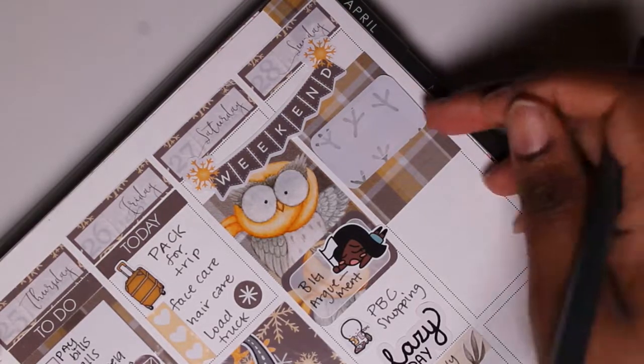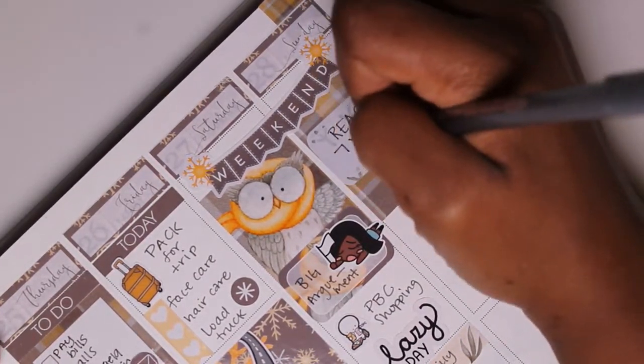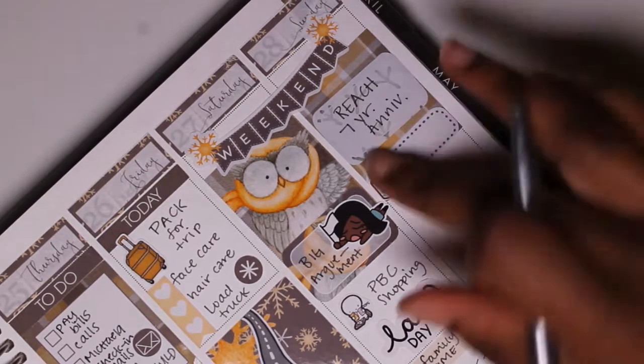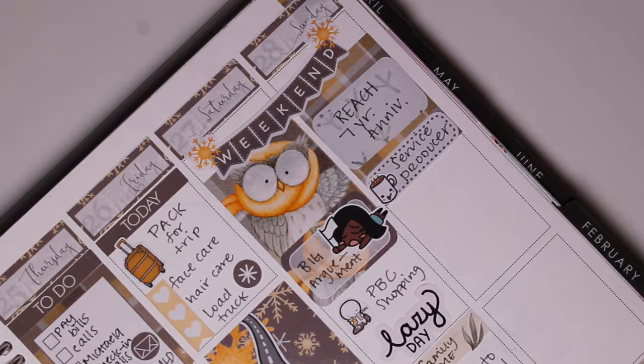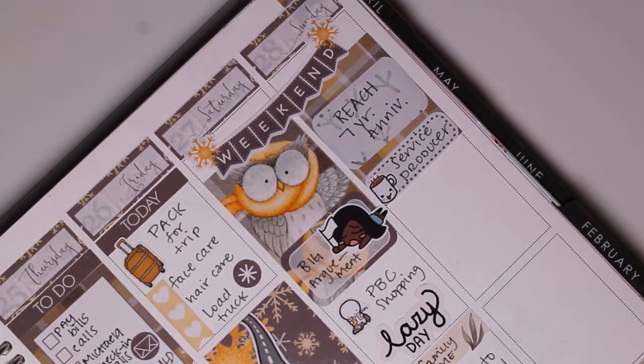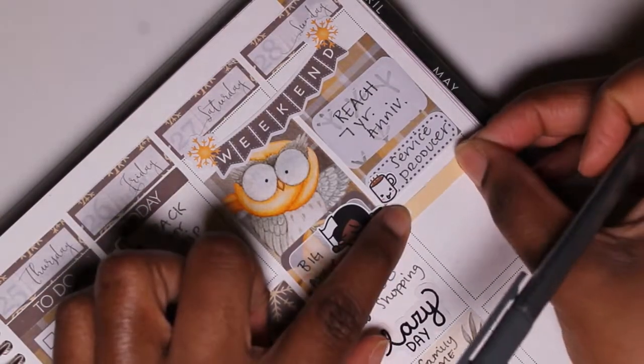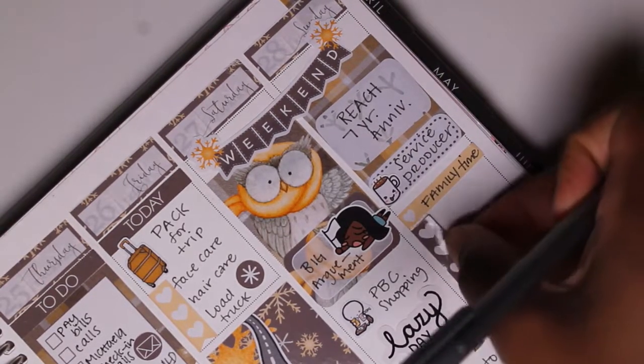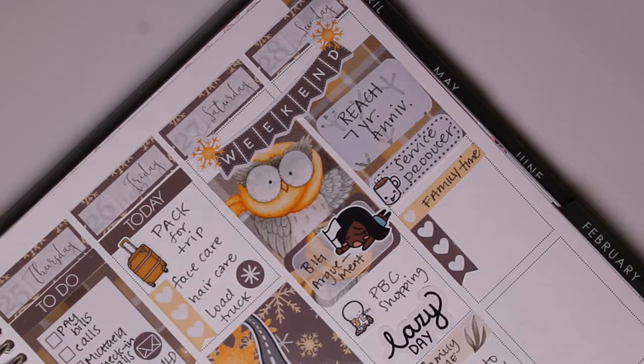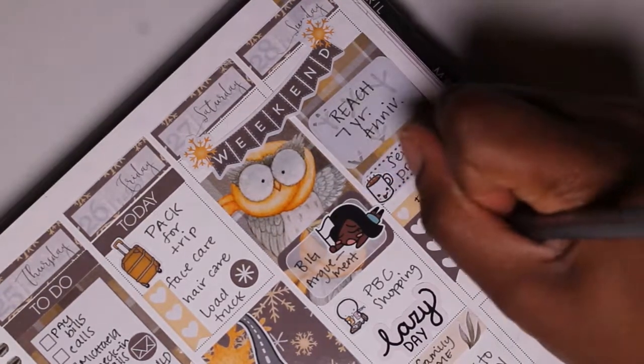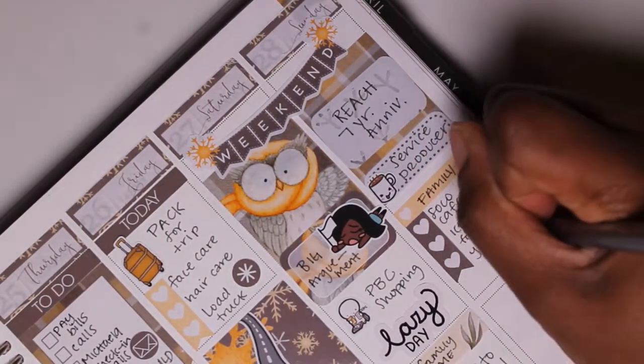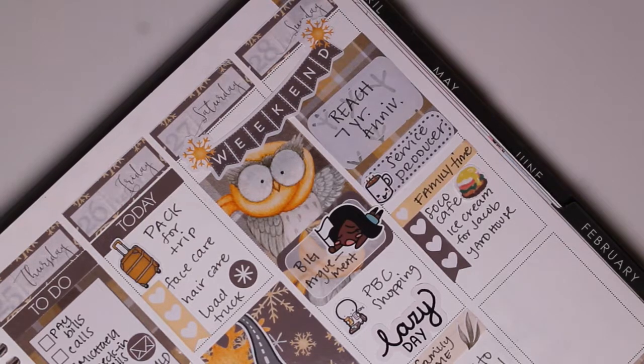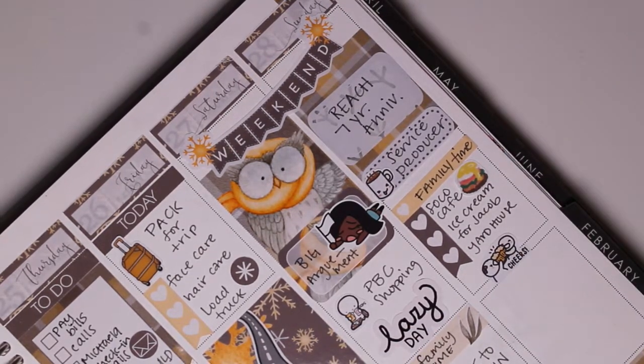So then on Sunday I did want to note that it was our church's seven year anniversary. I served that morning so I got up, made coffee and I think that coffee is from either Once More with Love or the Coffee Monsters Co. Then we had some family time and we went to brunch and I put that brunch sticker down from Plans with Vanessa. We took Jacob to get ice cream and then we went to the Yard House for some drinks and then I put that cheers sticker down and that cheers sticker's from Once More with Love.